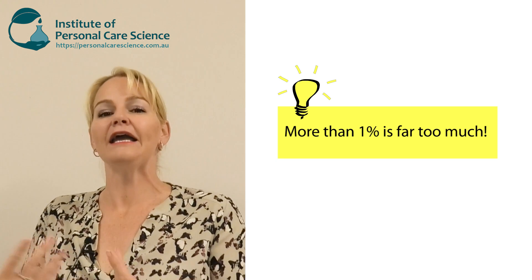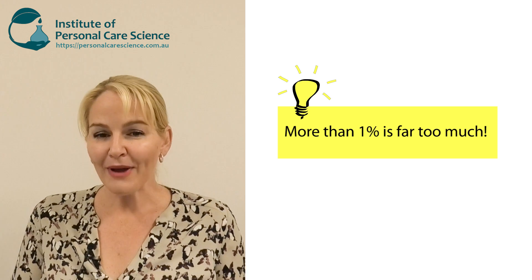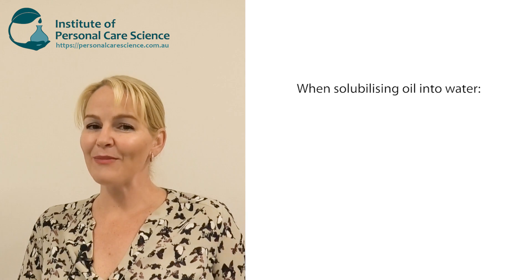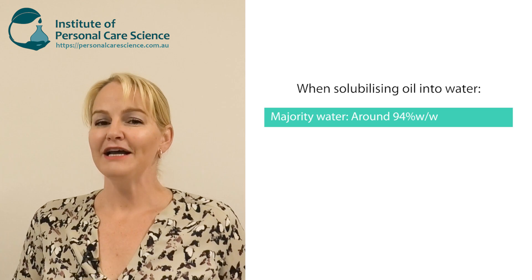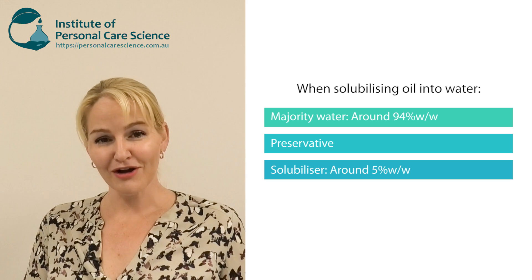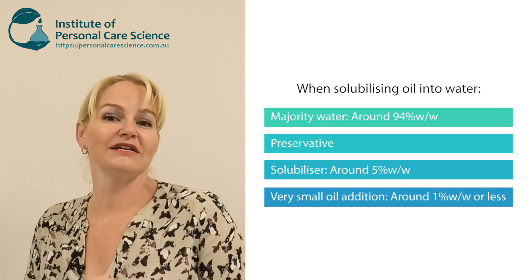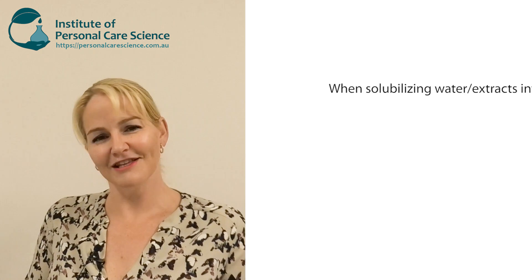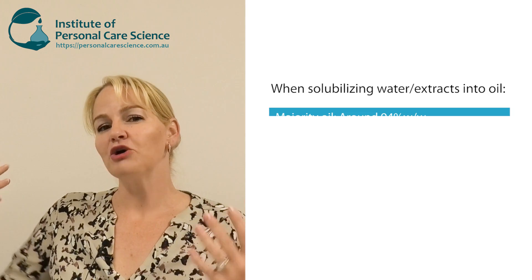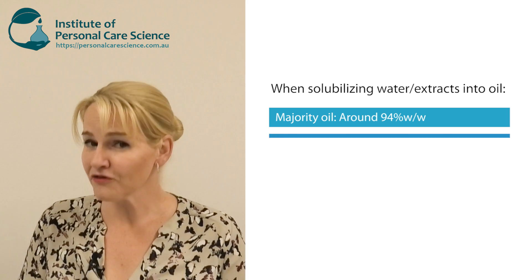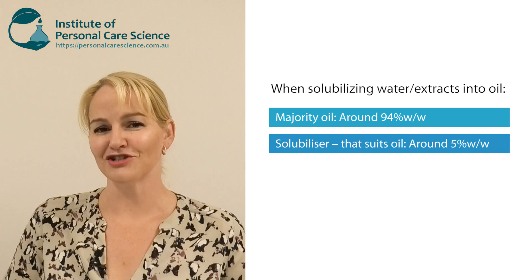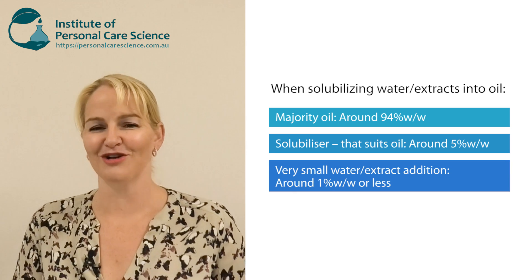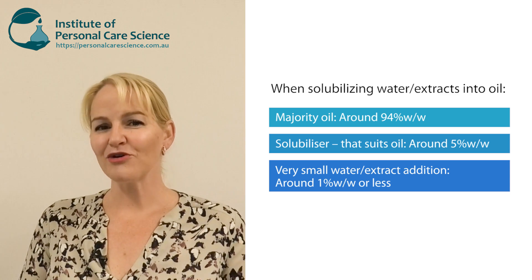You need to think of everything in reverse. When you're making a mist or a solubilized water-based product, remember it's majority water, there is some preservative, there's a solubilizer, and then there's a very small oil component. So when we're making the reverse, like in this video, there's a majority oil component, a very different type of solubilizing agent, and a very small water-soluble component. Just remember those inputs matter.